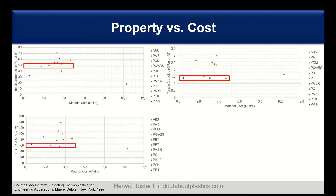Then also tensile modulus. When I say I need a tensile modulus — I can again plot it. And here in this case I need a minimum of 1 gigapascal at room temperature. I see I have again several choices. For example, I can go with a polyketone, or I can go again with a Polyamide 6, or even a polypropylene.